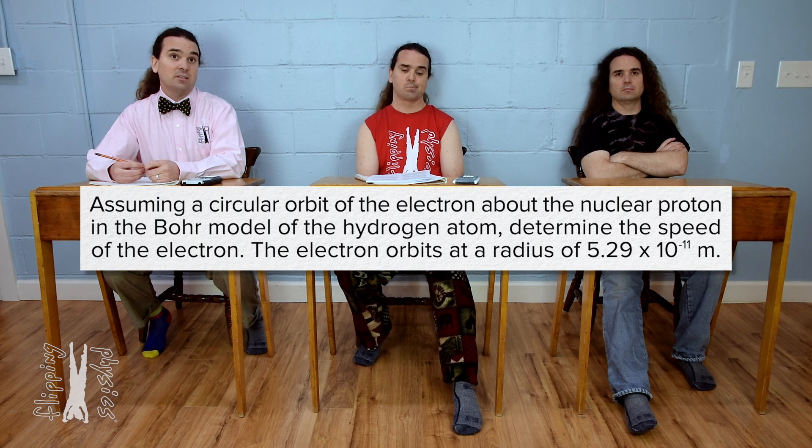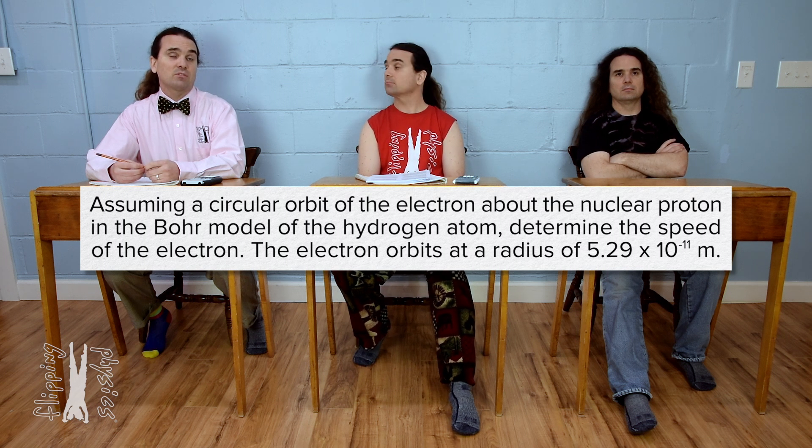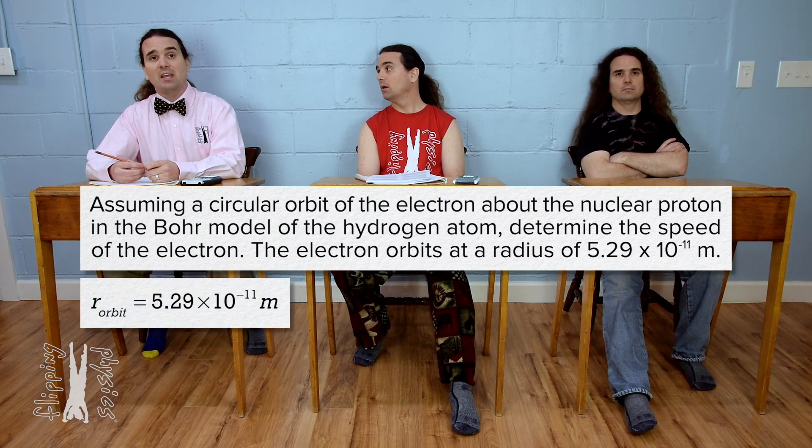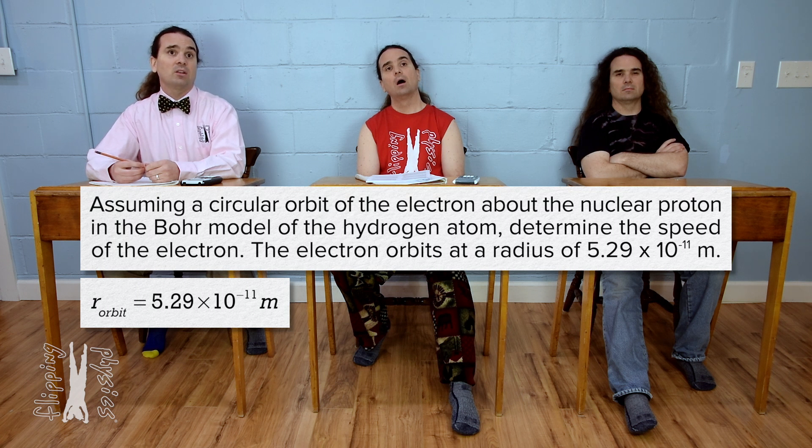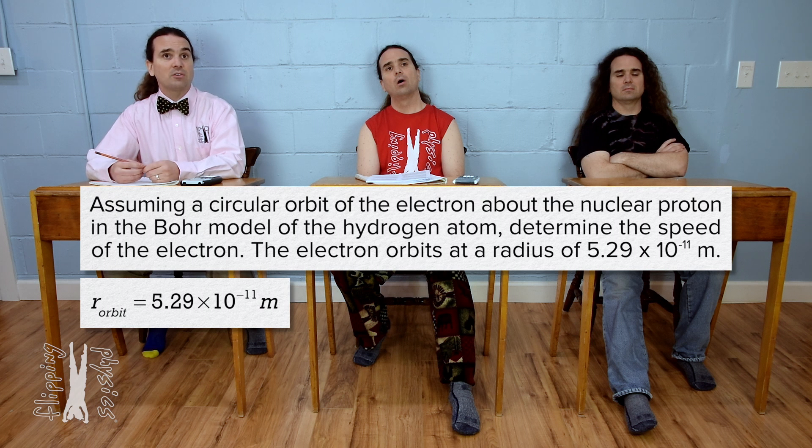Okay, the radius of the orbit of the electron equals 5.29 times 10 to the negative 11 meters. And we are looking for the speed of the electron, but it is moving in a circle, so the magnitude of the tangential velocity of the electron equals question mark.